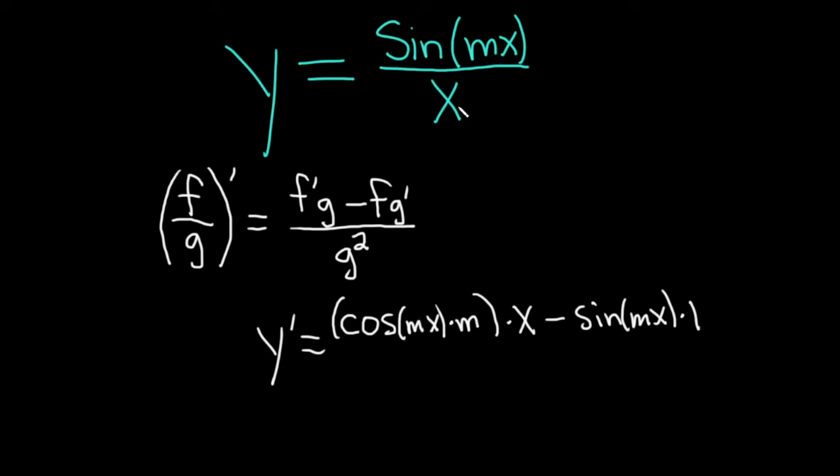times the derivative of the bottom. So the derivative of x is 1. So again, it's the derivative of the top, which is cosine mx times the derivative of the inside, which is m, times the bottom, minus the top, times the derivative of the bottom, which is just 1, all being divided by the bottom one, which is x squared.